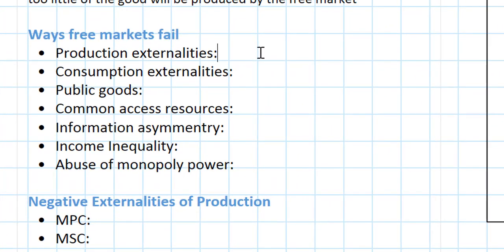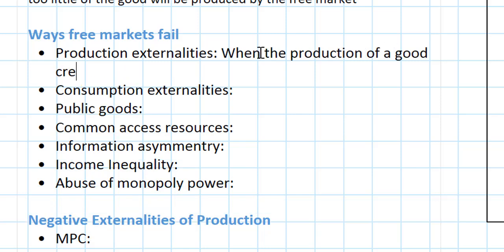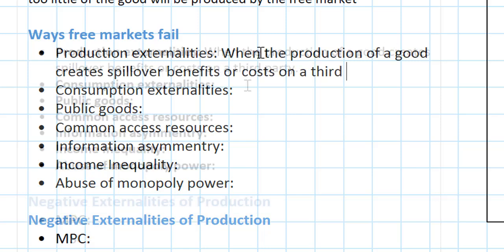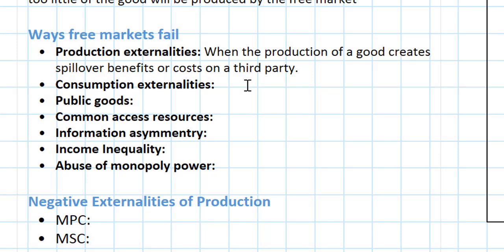There are situations in which the production of a good creates spillover benefits or costs on a third party. These situations are called production externalities. When production externalities exist, the level of production achieved by the free market will either be too much in the case of negative externalities, or too little in the case of positive externalities.